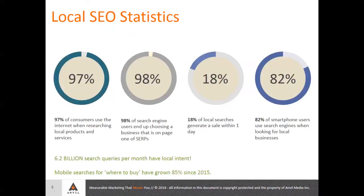98% of search engine users end up choosing a business that is on page one of the SERPs. 18% of local searches generate a sale within one day. 82% of smartphone users use search engines when looking for local businesses. And then these two are fairly striking: 6.2 billion search queries per month have local intent — and this statistic is from over a year ago, so my hunch is that number is only increasing. And mobile searches for 'where to buy' have grown 85% since 2015.